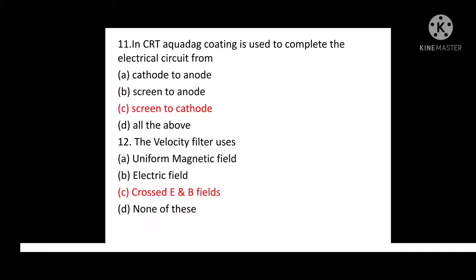Question No. 11: In CRT, aquadag coating is used to complete the electrical circuit from? Option A: Cathode to anode. Option B: Screen to anode. Option C: Screen to cathode. Option D: All of the above. Correct answer is Option C: Screen to cathode.